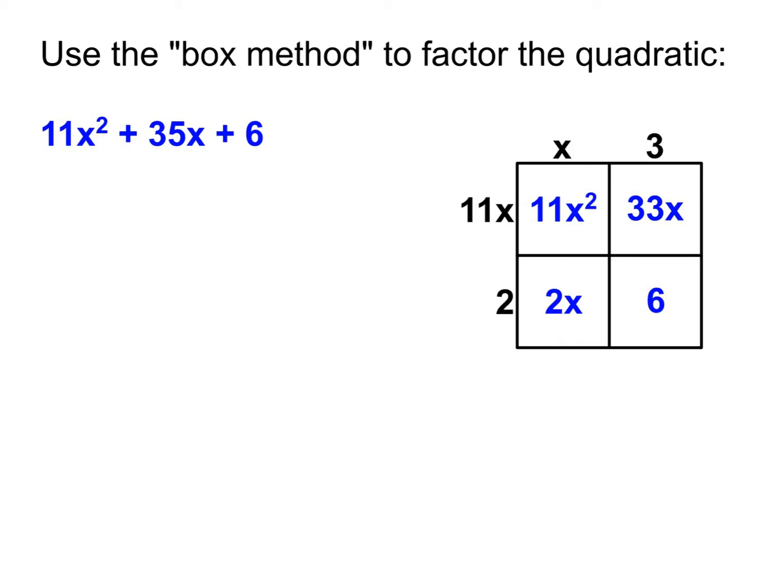So having done that, I now can write the factored form. Because I can get the first parentheses reading across the top, and then the second parentheses reading down the left side. And so that is our factored form: x plus 3 times 11x plus 2. And again, the order doesn't matter. The part that does matter is the 11 has to be in the same parentheses with the 2, and the x has to be in the same parentheses with the 3.